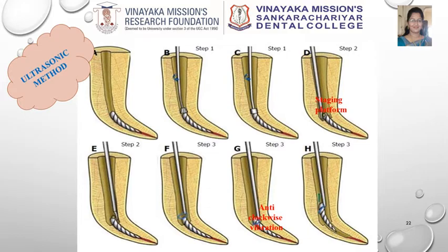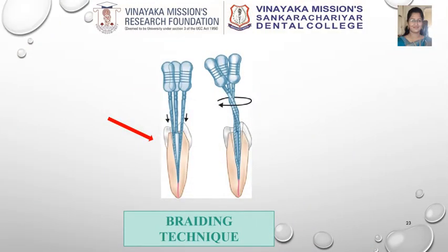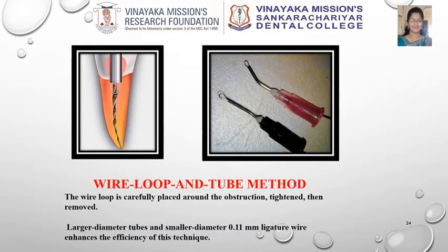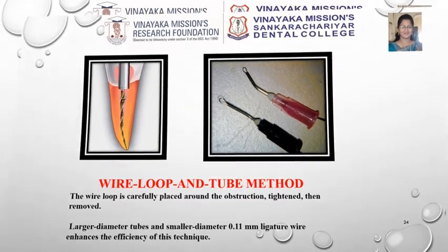Next is the braiding technique. Around three hand files are inserted into the canal, twisted to engage the fragment, and then withdrawn along with the separated instrument. In the wire loop and tube method, the two free ends of a ligature wire are passed through the hub end of an injection needle. The wire loop is carefully placed around the obstruction, tightened, and then removed.